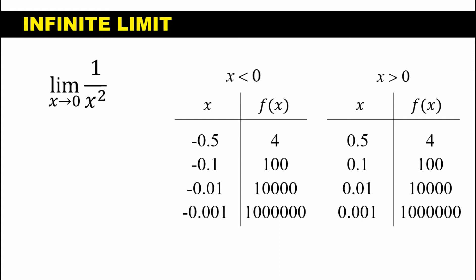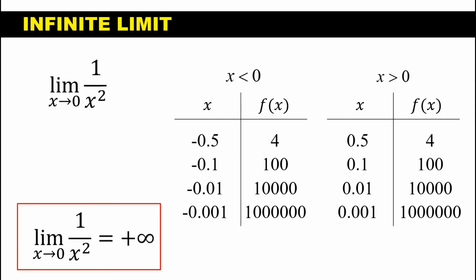Observe that as we move closer and closer to 0 from both directions, the value of f(x) is increasing up to positive infinity. As we approach 0 from the left and from the right, both one-sided limits are approaching positive infinity. Thus, we can conclude that the limit of 1 over x squared as x approaches 0 is positive infinity. If we move closer and closer to 0 — say negative 0.00001 or 0.00001 — as long as we are not using 0, we observe an increasing pattern. Since both one-sided limits approach positive infinity, the limit of the function is positive infinity.